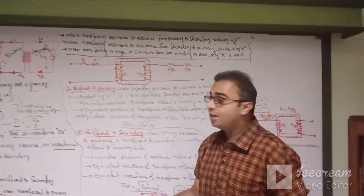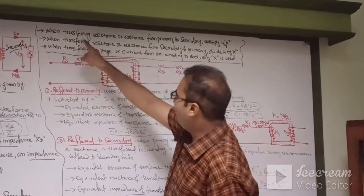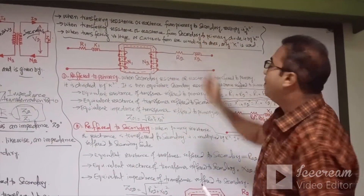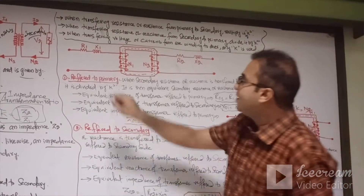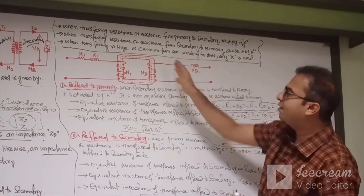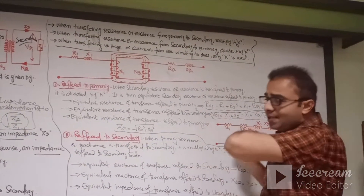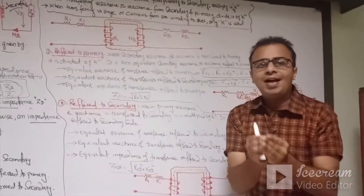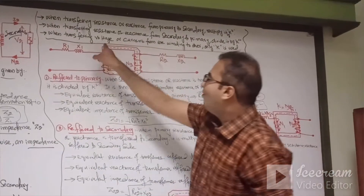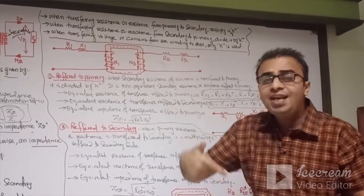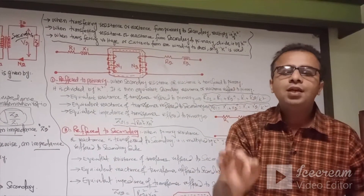There are three general rules for the transformation of impedance in the transformer. Rule one: when transferring resistance or reactance from primary to secondary, multiply by K². Rule two: when transferring resistance or reactance from secondary to primary, divide by K². Rule three: when transferring voltage and current from one winding to another, only multiply or divide by K.